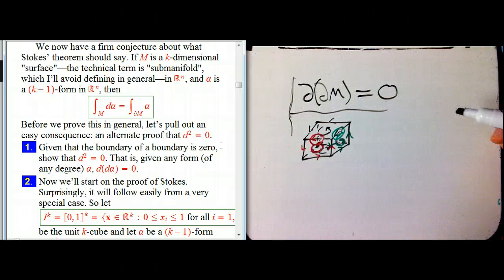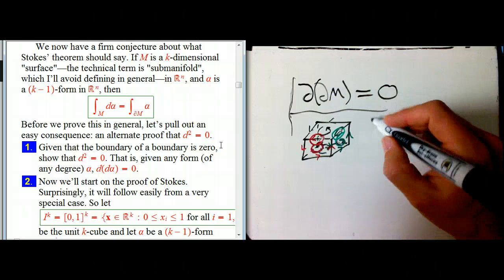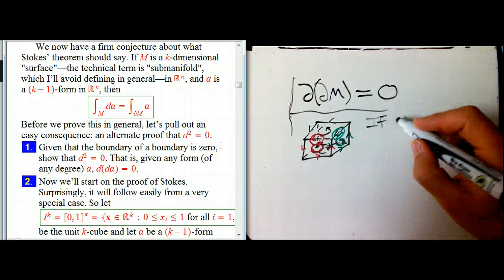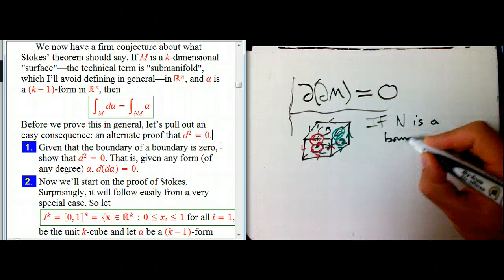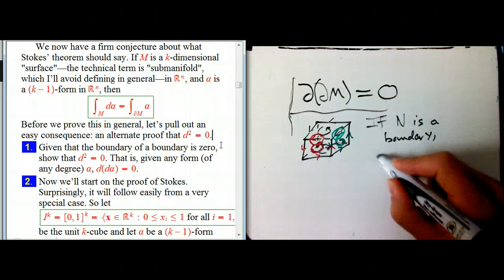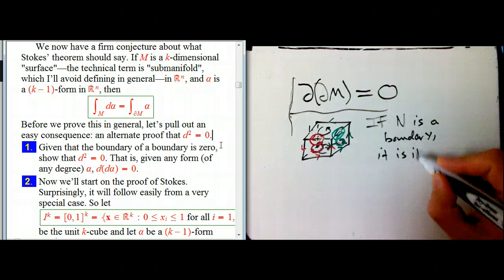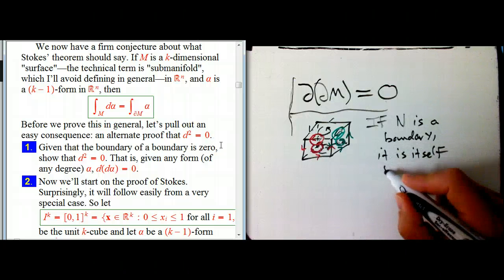And that's going to be zero. So another way to say it is that if some surface like N is a boundary, if it is the boundary of something, it is itself boundaryless.